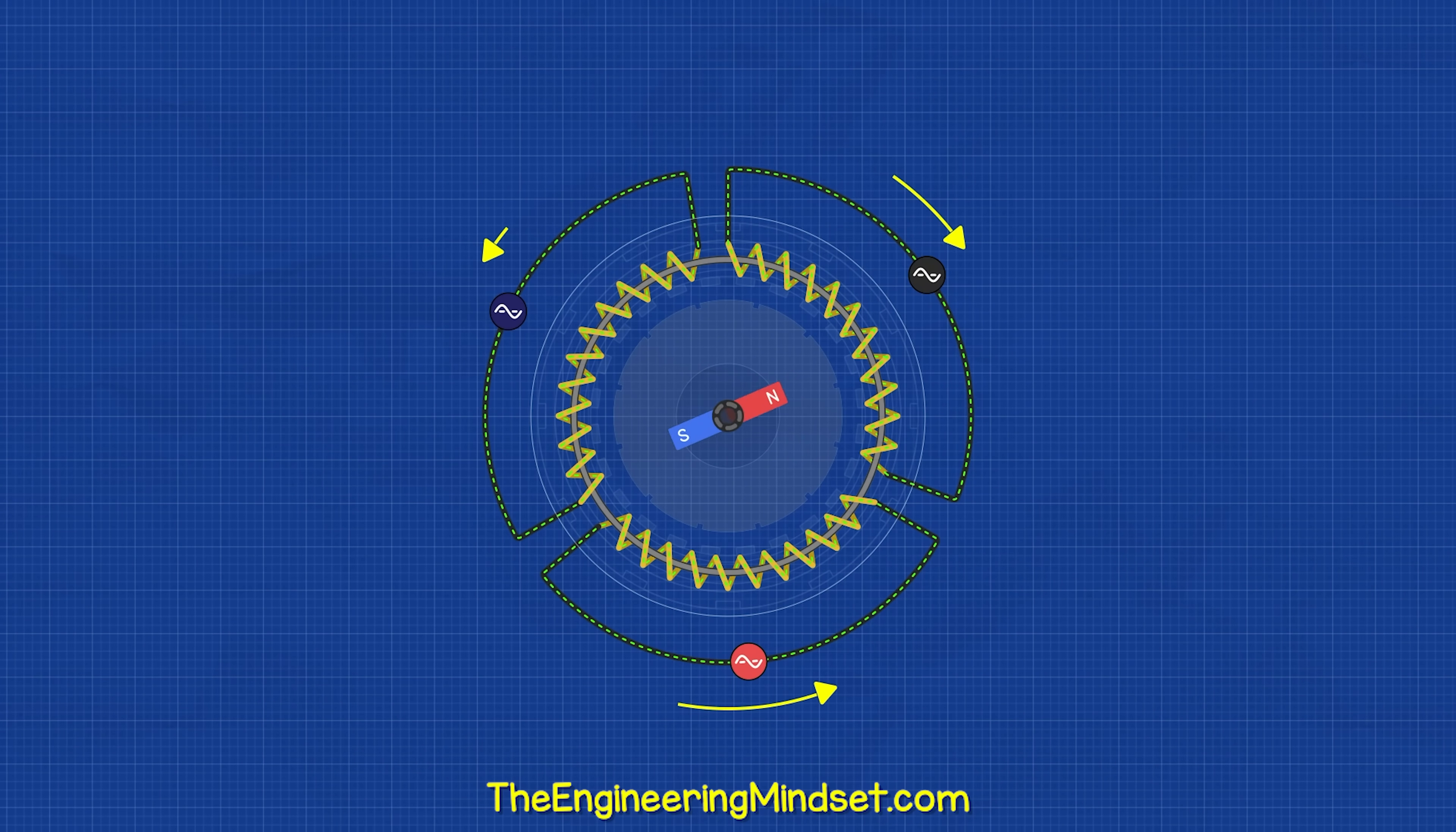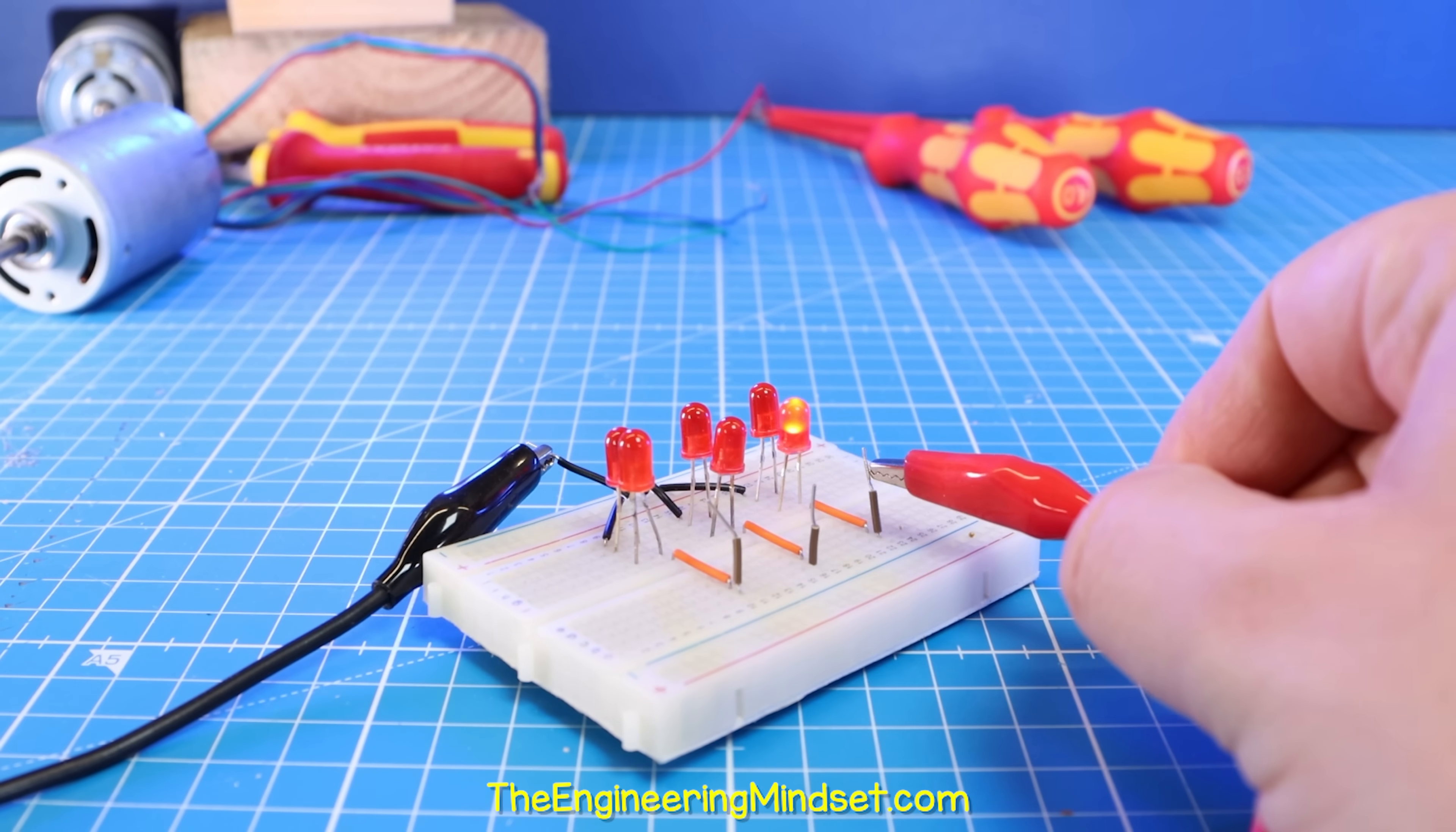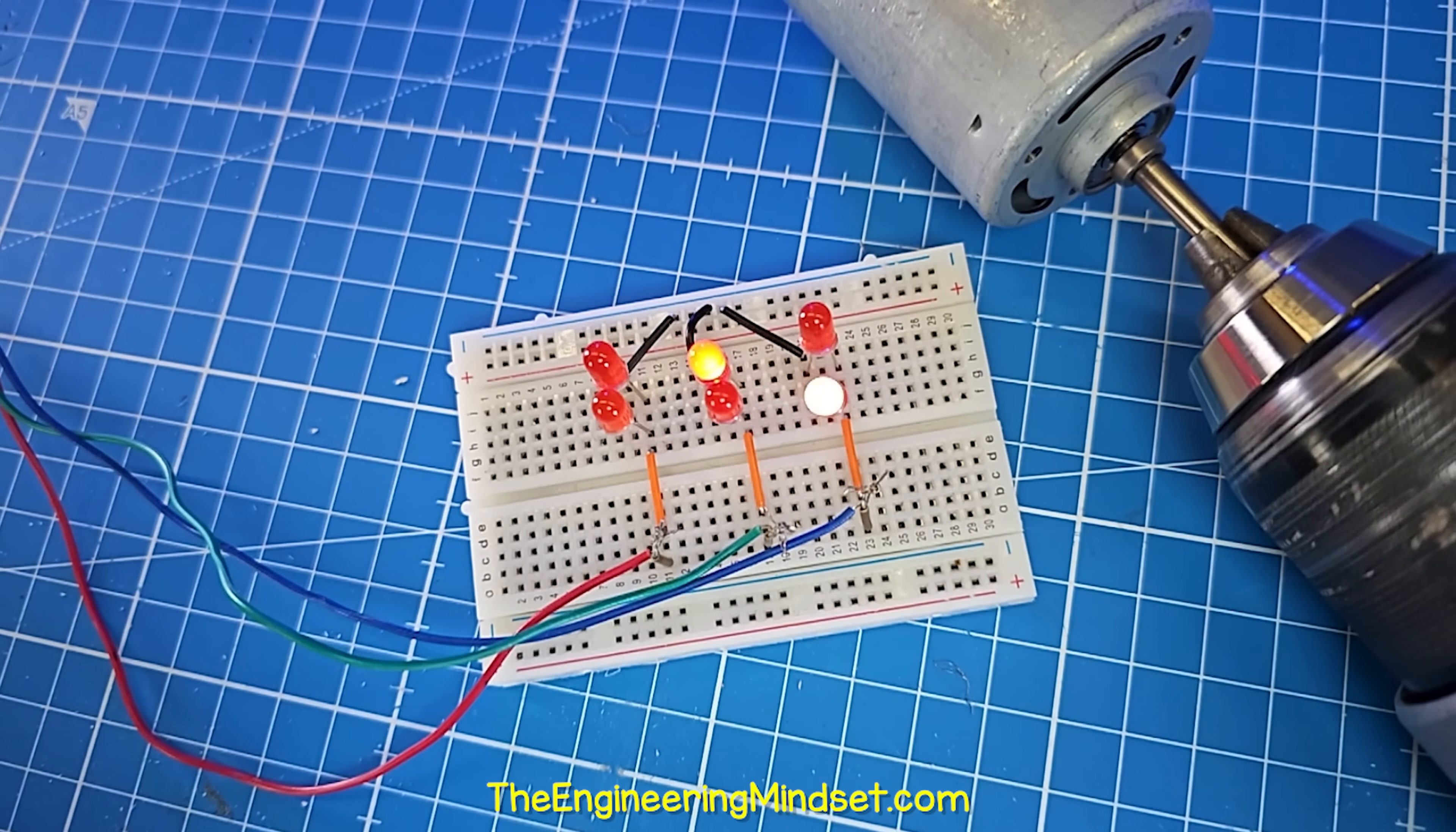The current is flowing back and forth in each phase. We can prove that with this small three-phase generator and some LEDs. We arrange the LEDs in pairs of opposite polarities, so that only one will illuminate at any time depending on the direction of the current in the wire. We can see they are illuminating, and in slow motion, we can clearly see the current is alternating direction.